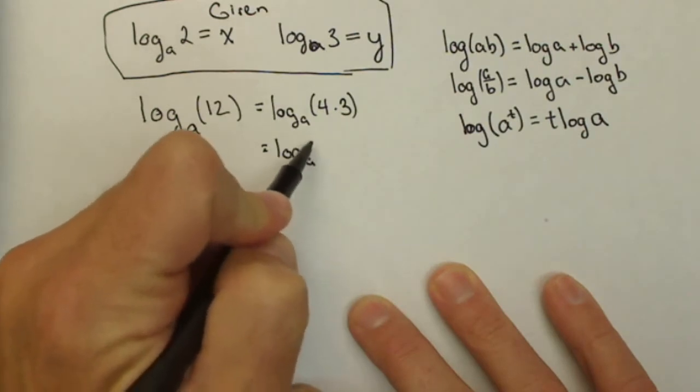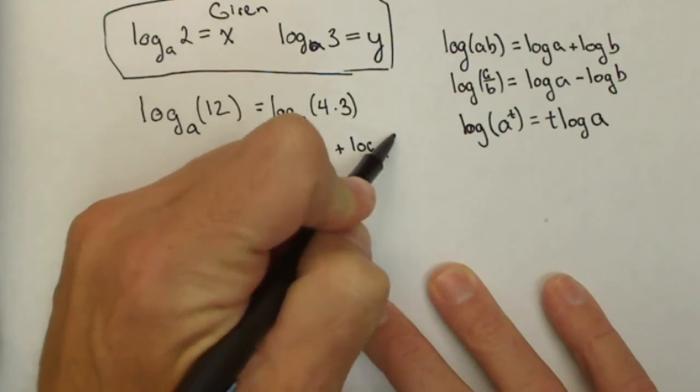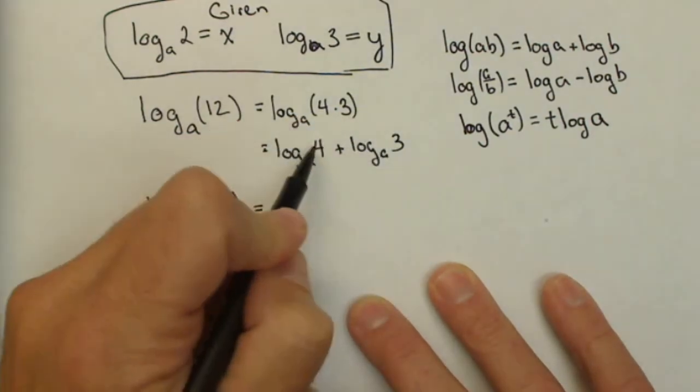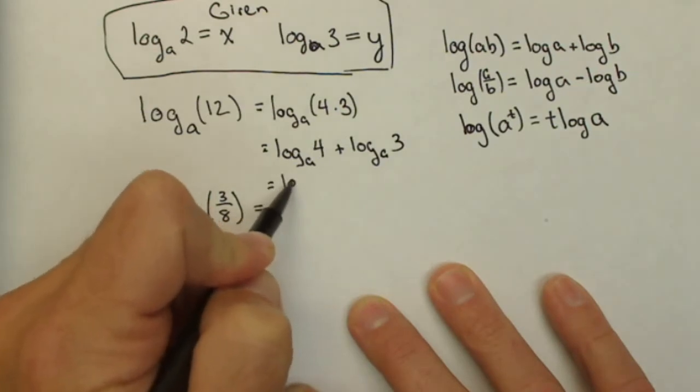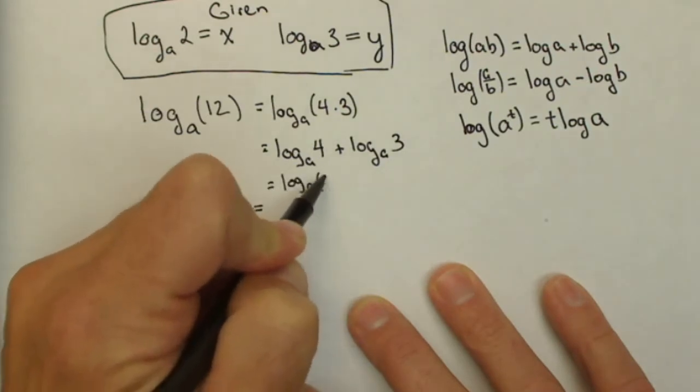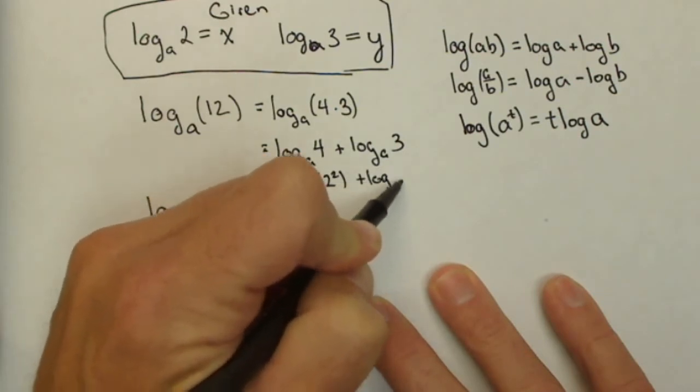Log base a of 4 plus log base a of 3. Now remember 4 is 2 squared, so this is log base a of 2 squared plus log base a of 3.